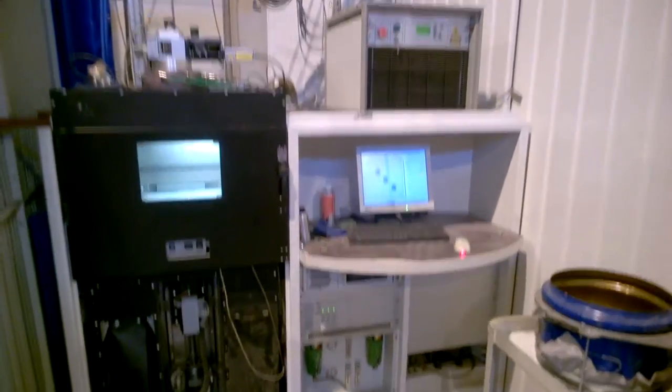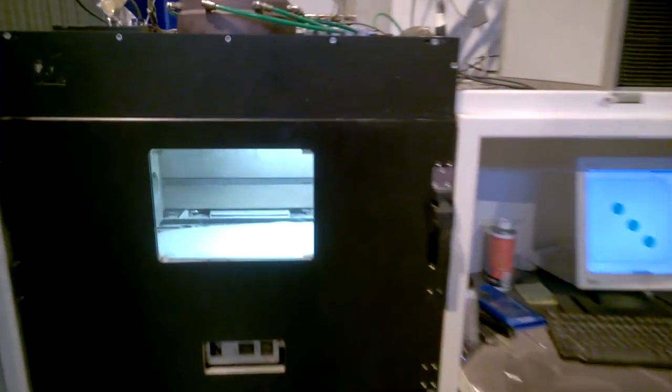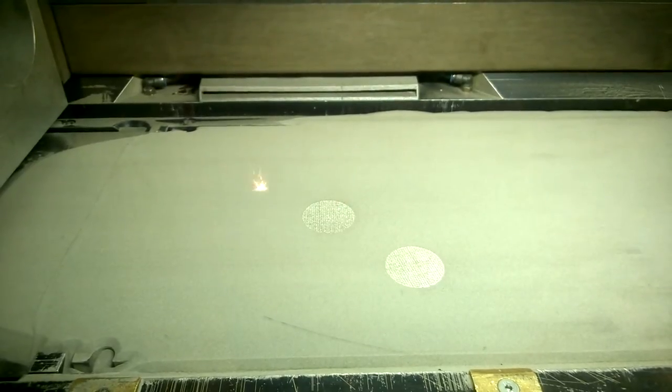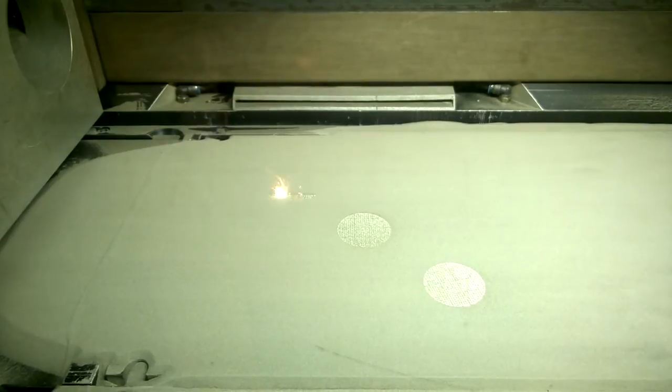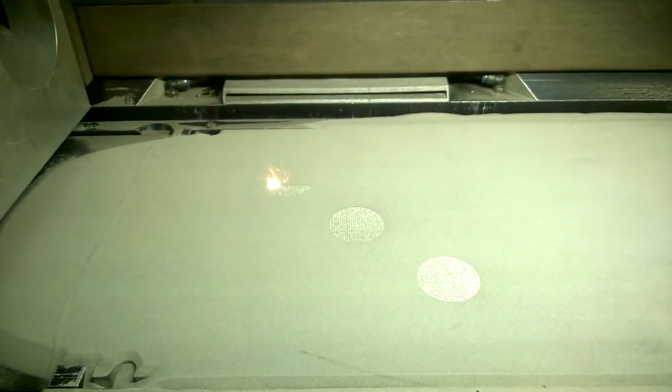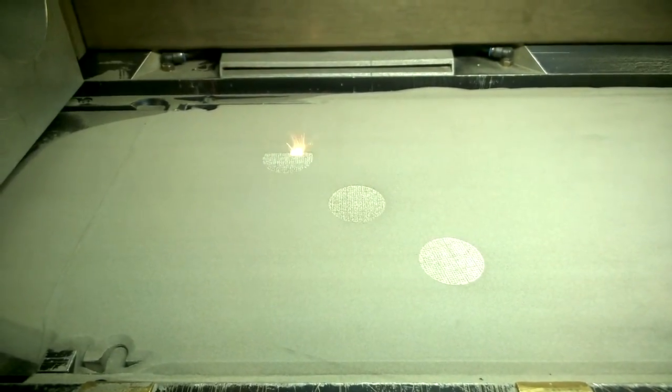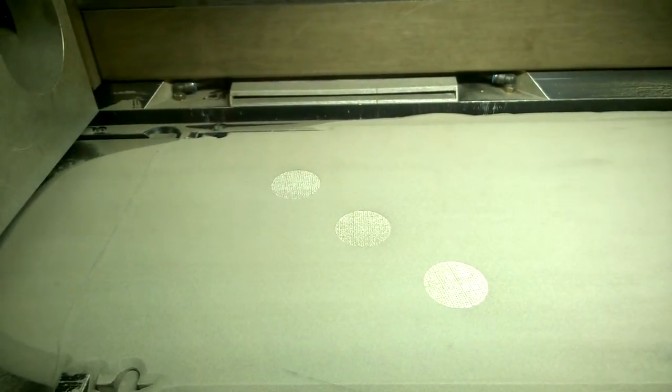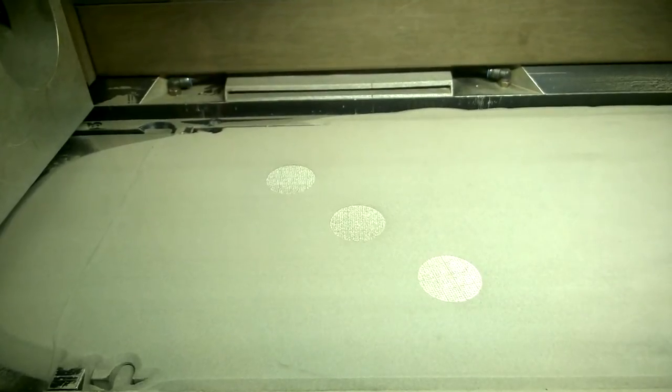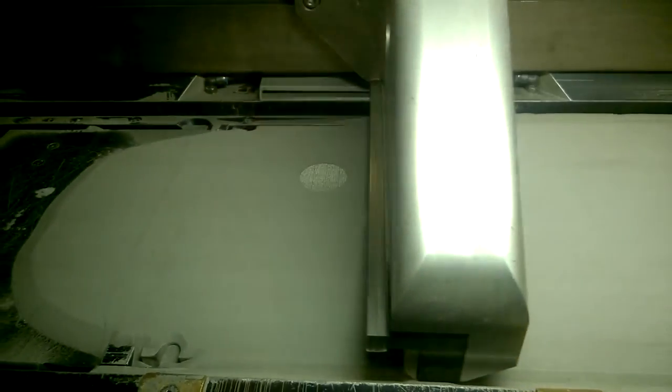This is the additive manufacturing machine that we have in Lappeenranta University of Technology. And from here we can see the laser beam scanning the layer, the geometry of the one layer as it goes over there. And soon the recoater will be doing a new layer of powder which again laser beam is scanning. This continues until the part is totally finished. Now the recoating is done. And the beam is scanning again the new layer.